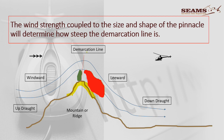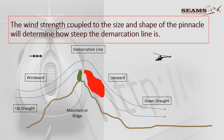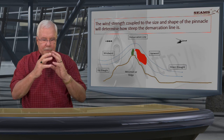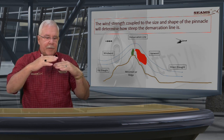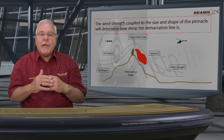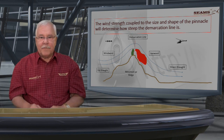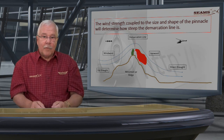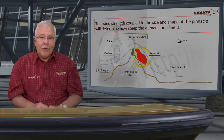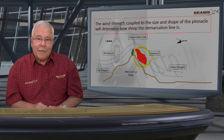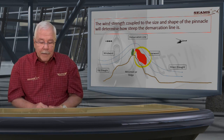The wind strength, coupled to the size and shape of the pinnacle, will determine how steep the demarcation line is. If the mountain is flat, you could have a very shallow demarcation line — downdraft only begins from a point further along. With a sharp pinnacle, there's going to be serious up and down drafts. I've been on these pinnacles, and if you end up on the bad side you're going to fall out of the sky and just hope you don't touch the side of the mountain.